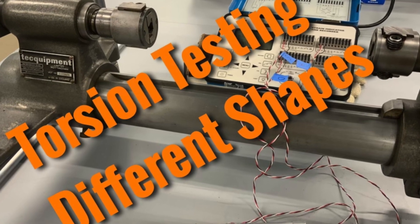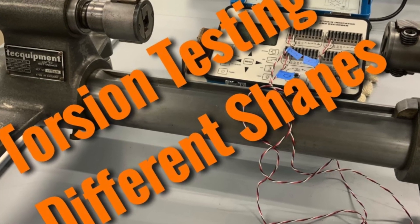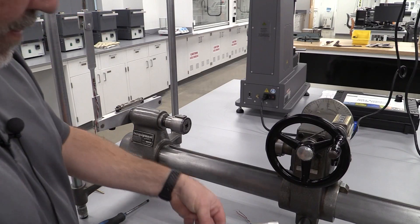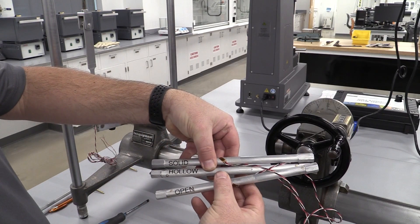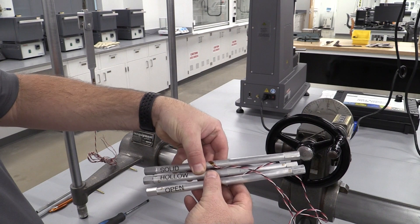Okay, at this point you have probably watched the prep video and you know we're gonna be doing torsion on three different samples here. We have a solid, a hollow, and an open sample.